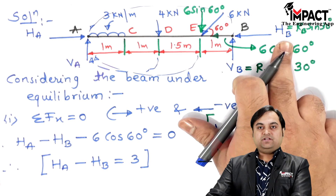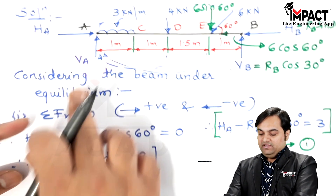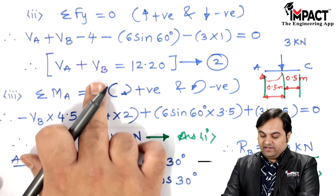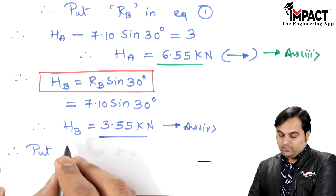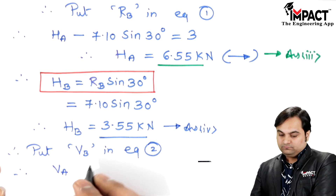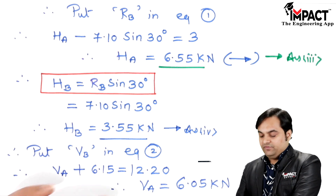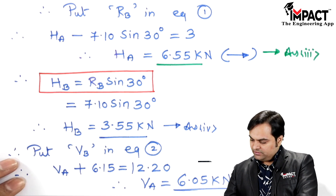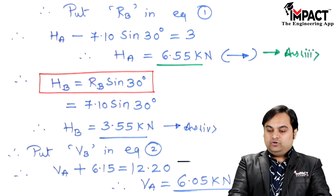Only VA remains. Substituting VB = 6.15 kN into Equation 2 (VA + VB = 12.20), we get VA = 12.20 − 6.15 = 6.05 kN. The positive value confirms the assumed direction is correct. All reactions have now been calculated.